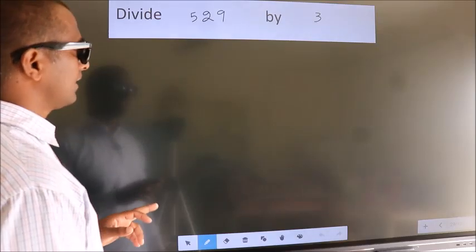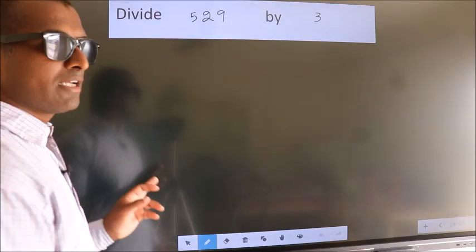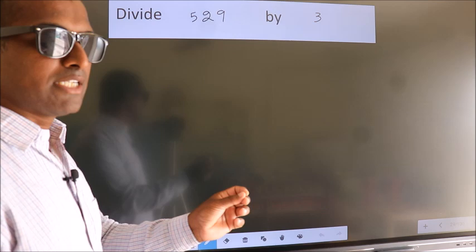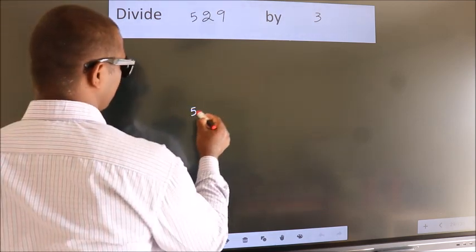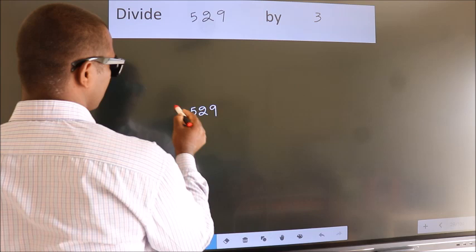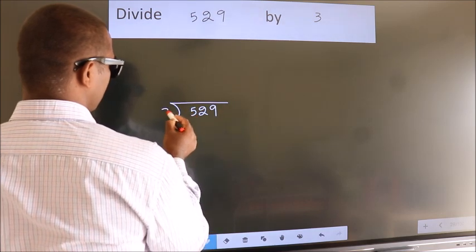Divide 529 by 3. To do this division, we should frame it in this way: 529 here, 3 here.